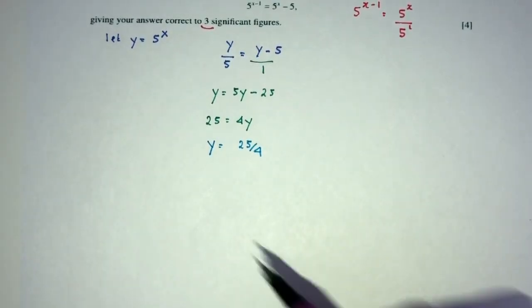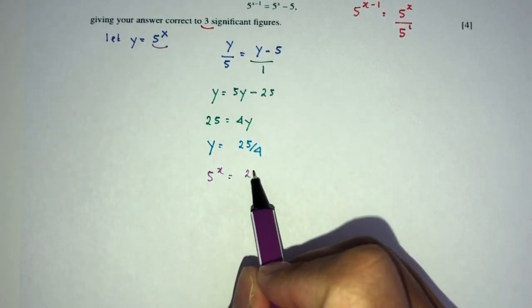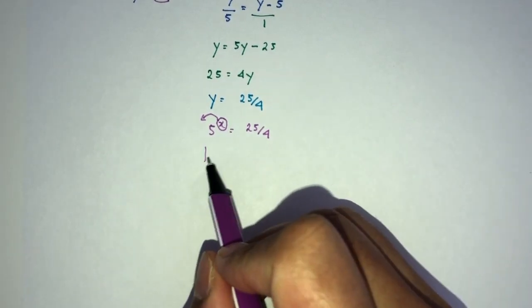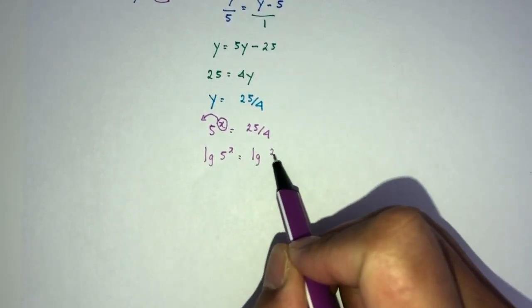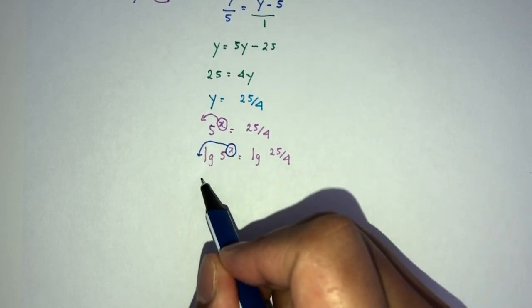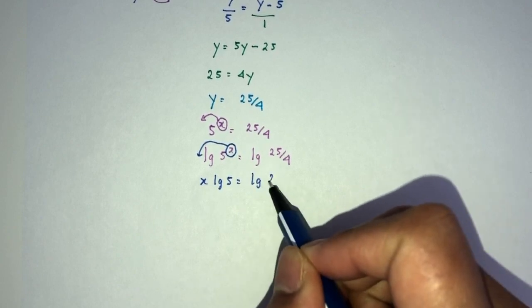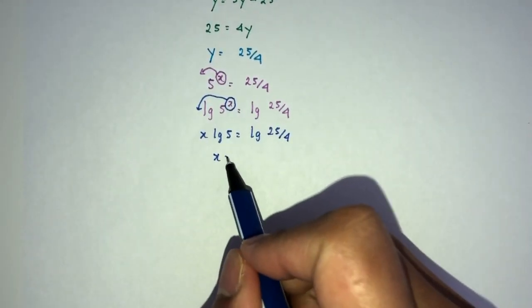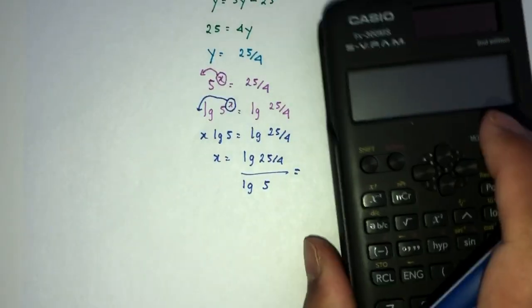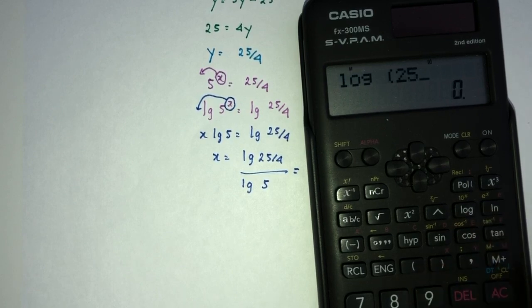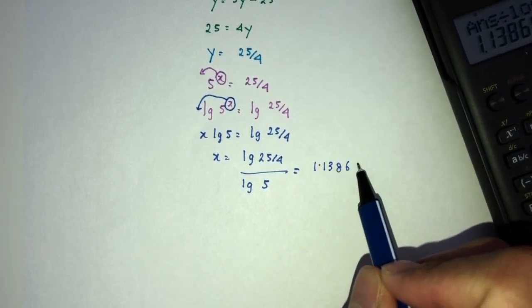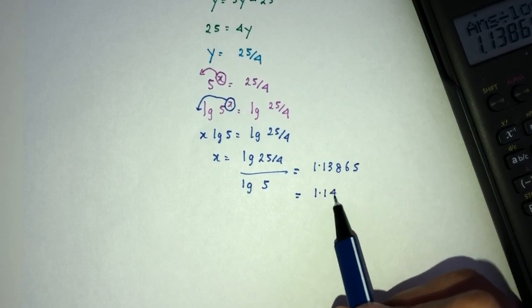But now, we are not trying to find the value of y. We are trying to find the value of x. So replace this back. y is 5^x is equal to 25 over 4. Now, as you can see, the x is a power. We have to bring this down by using log on both sides. So log of this one is equal to log of this one. Let's use the laws of logarithms to bring this down. You will have x log of 5 is equal to log of 25 over 4. So x will be the value of log of 25 over 4 divided by log of 5. We have to provide the answer to 3 significant figures. So log of 25 divided by 4 divided by log of 5, that should be 1.13865, correct to 3sf should be 1.14.